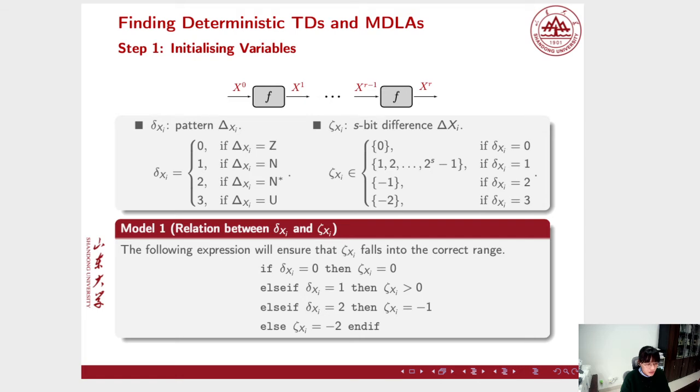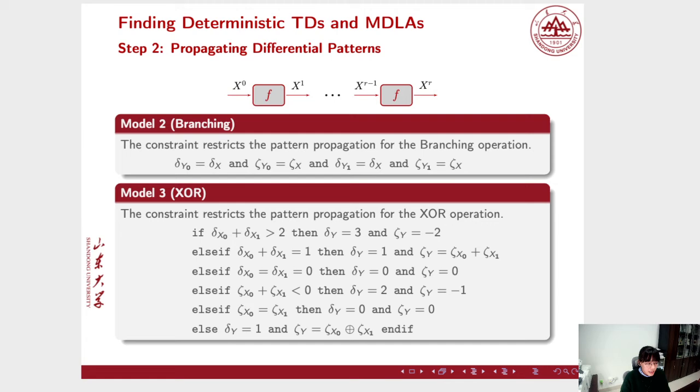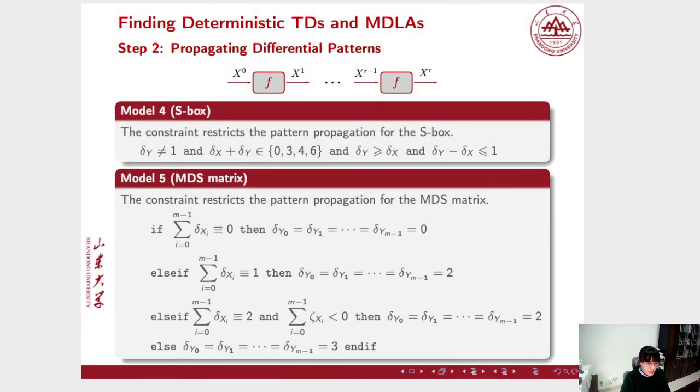With this method, we first consider the relation between Δx and ζx since they correspond to a semi-inner state. Adding this expression into the CSP will ensure that ζx falls into the correct region. Then, the second step is propagating differential patterns. To propagate the differential pattern across one round of encryption, we decompose the round function into multiple simple operations. We generate CSP models, in other words, constraints for four frequently used operations: branching, XOR, S-box, and MDS matrix operations. Generally, these four models are adequate for us to handle most of the primitives. By organizing these basic models, we can create constraints representing the pattern propagation across the cipher.